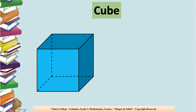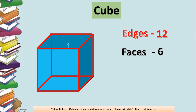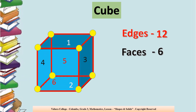Cube. How many edges are there in a cube? There are 12 edges — let's count: 1, 2, 3, 4, 5, 6, 7, 8, 9, 10, 11, 12. How many faces are there in a cube? There are 6 faces: 1, 2, 3, 4, 5, 6. And how many vertices are there? There are 8 vertices: 1, 2, 3, 4, 5, 6, 7, 8.